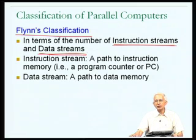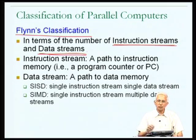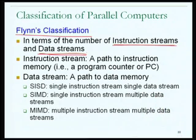With these two concepts, Flynn classifies all possible parallel computers. He uses single or multiple instruction streams and single or multiple data streams, creating a concise classification that breaks the realm of parallel computers into categories based on whether the number of instruction streams and data streams is one or many. Let us look at each of these to get a better understanding.